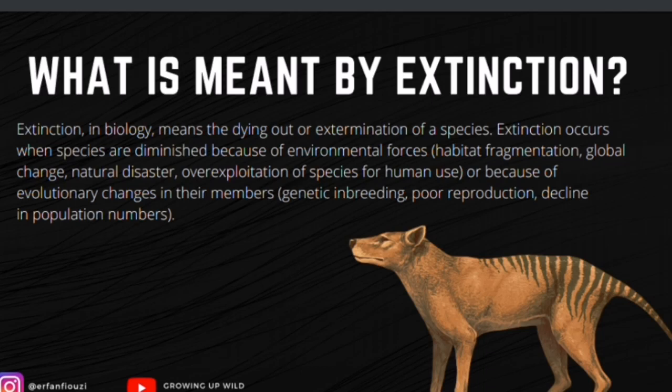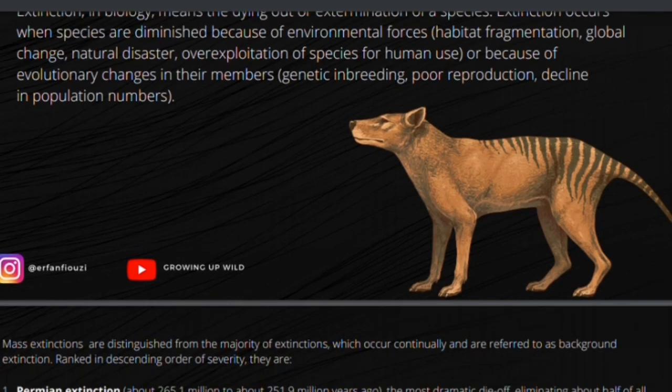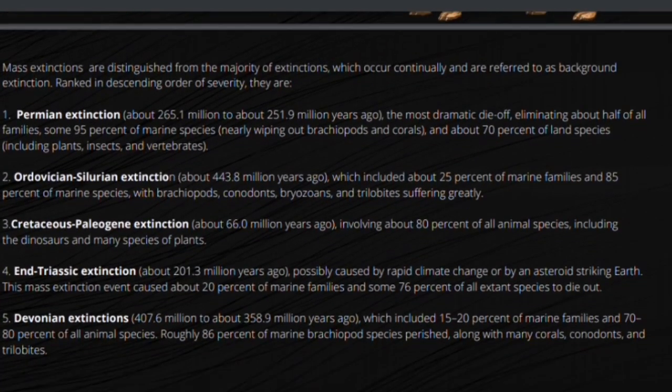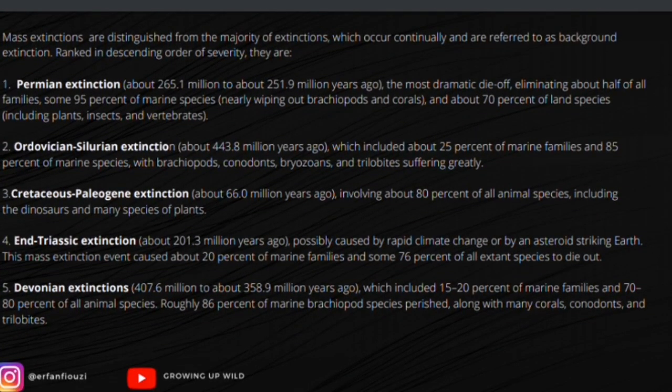Although extinction is an ongoing feature of Earth's flora and fauna, the vast majority of species ever to have lived are extinct. The fossil record reveals five unusual large extinctions, each involving the loss of vast numbers of species. These conspicuous declines in diversity are referred to as mass extinctions, which are distinguished from background extinctions that occur continually. Ranked in descending order of severity, they are as follows.